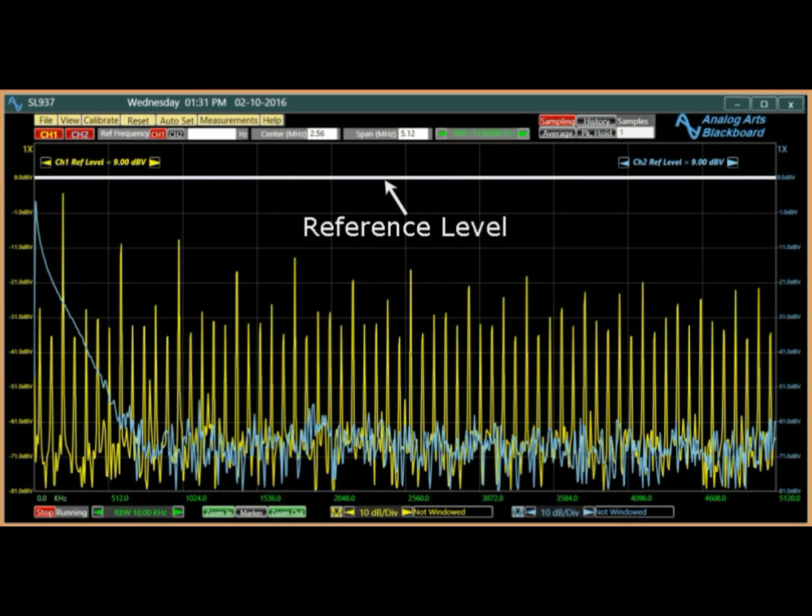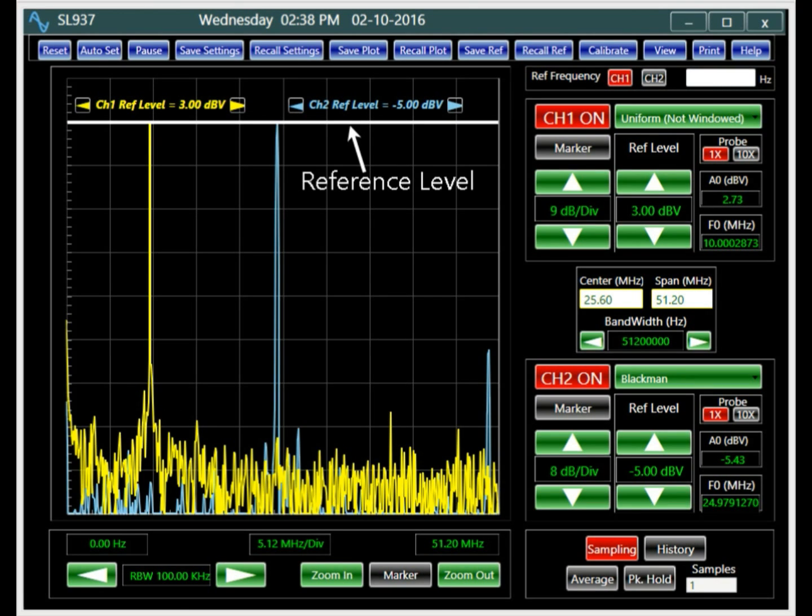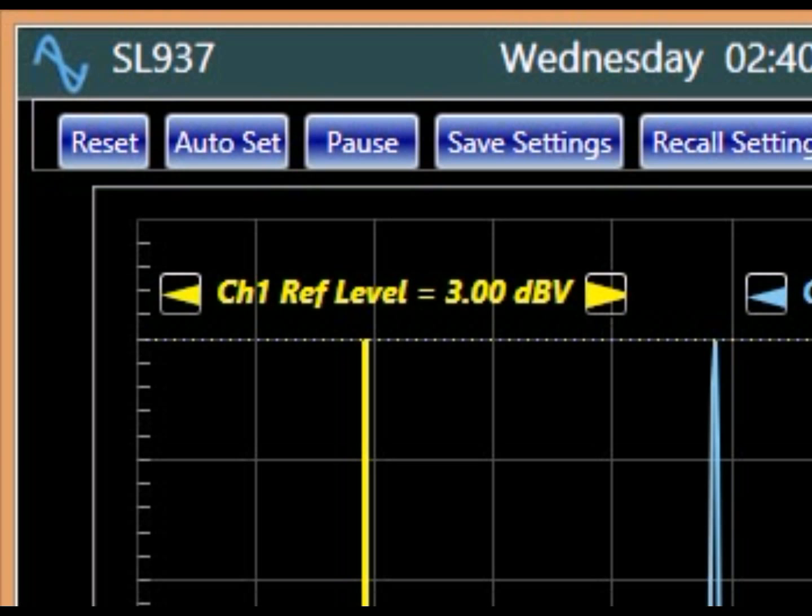The reference level is another important parameter of a spectrum plot. The spectrum analyzer signal measurements are referenced to a horizontal level at the top of the screen referred to as the reference level. The frequency components of a signal are measured to this reference. A 3 dBV reference level means that the full scale of the spectrum analyzer is set at 1.4 volts RMS or about 4 volts peak to peak.